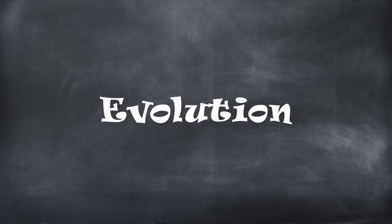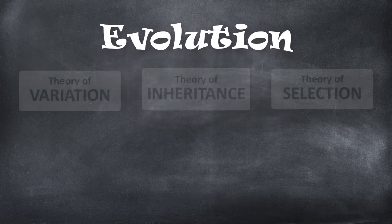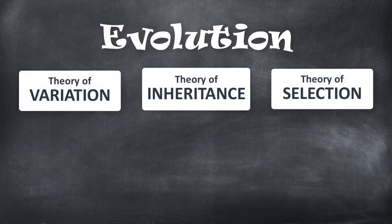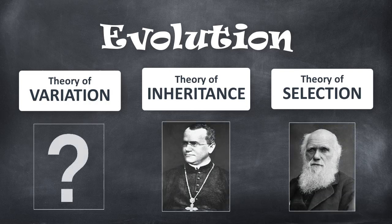Understanding evolution actually requires three theories: variation, inheritance, and selection. The latter two are well developed, but how does nature generate the heritable variations upon which nature selects?